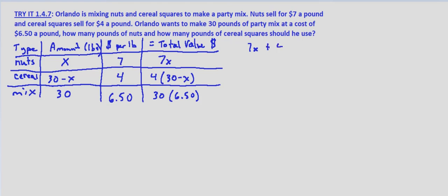We know that we just add up the total value. So 7 times x, the amount of nuts, plus $4 per pound times 30 minus x pounds of cereal squares,